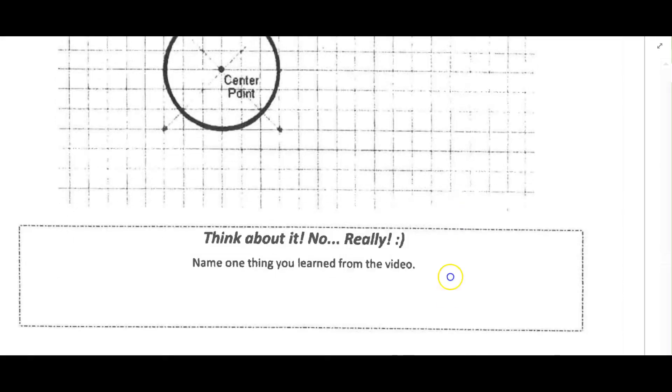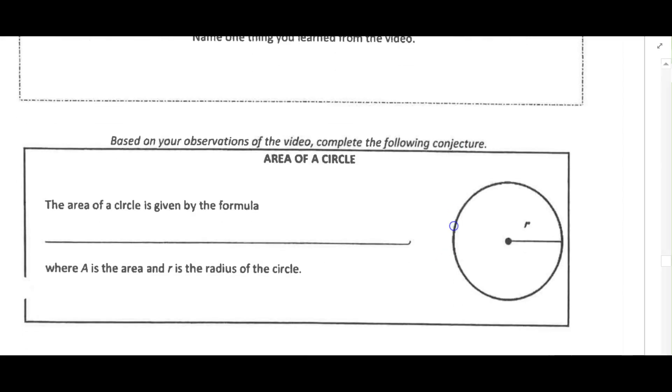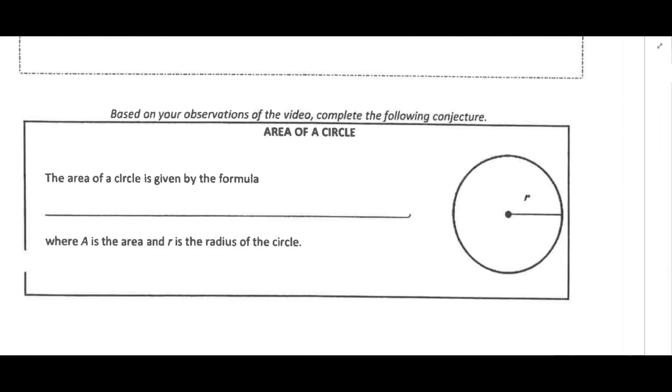Let's skip down to the formula, which some of you may remember. If you remember, the area of a circle is given by the formula A, and I'll usually put just a little circle symbol for the subscript. Area of a circle is equal to pi r squared. A is the area, and r is the radius.